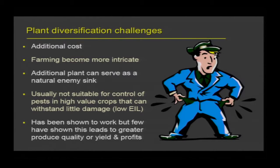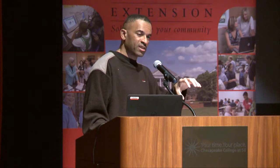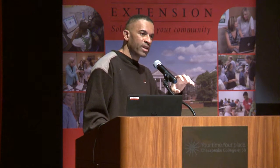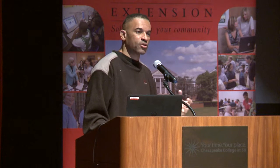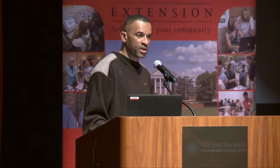There are many studies that have shown that plant diversification works well — you can get reduction in weeds and reduction in insect pest pressure — but it doesn't always result in increased yield or greater profits. Other difficulties: sometimes it actually attracts pests, because there may be something in that additional plant that the pest likes, so it may attract them to the system more than you would normally receive.